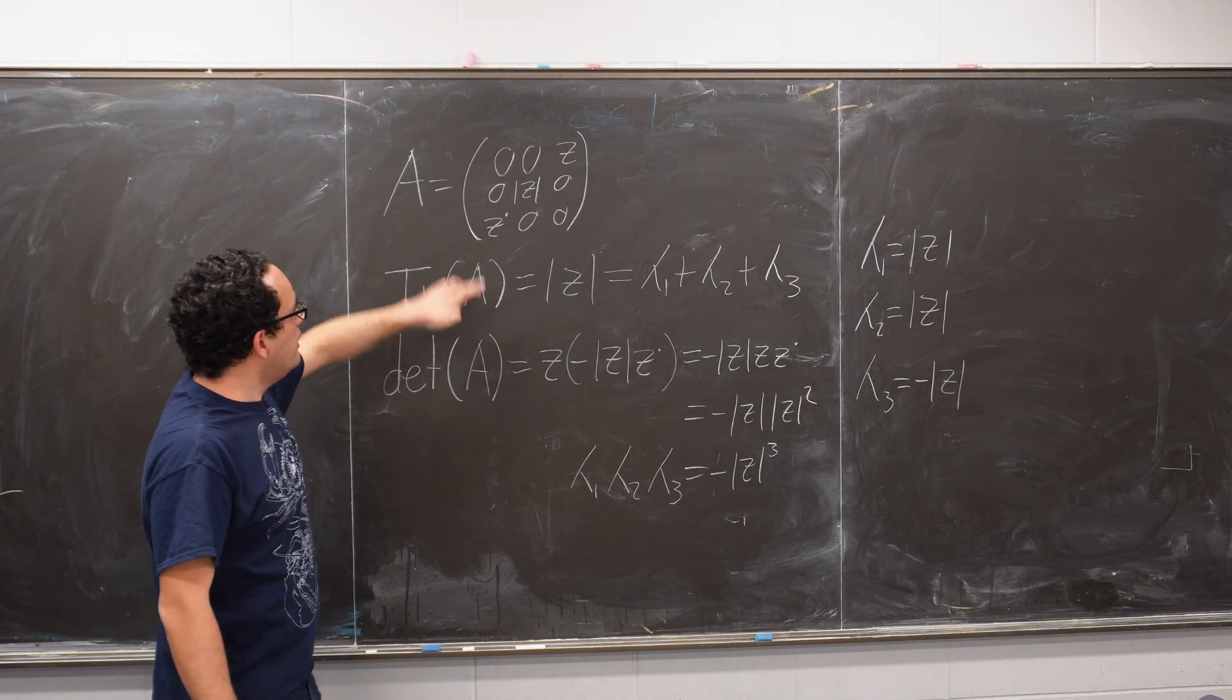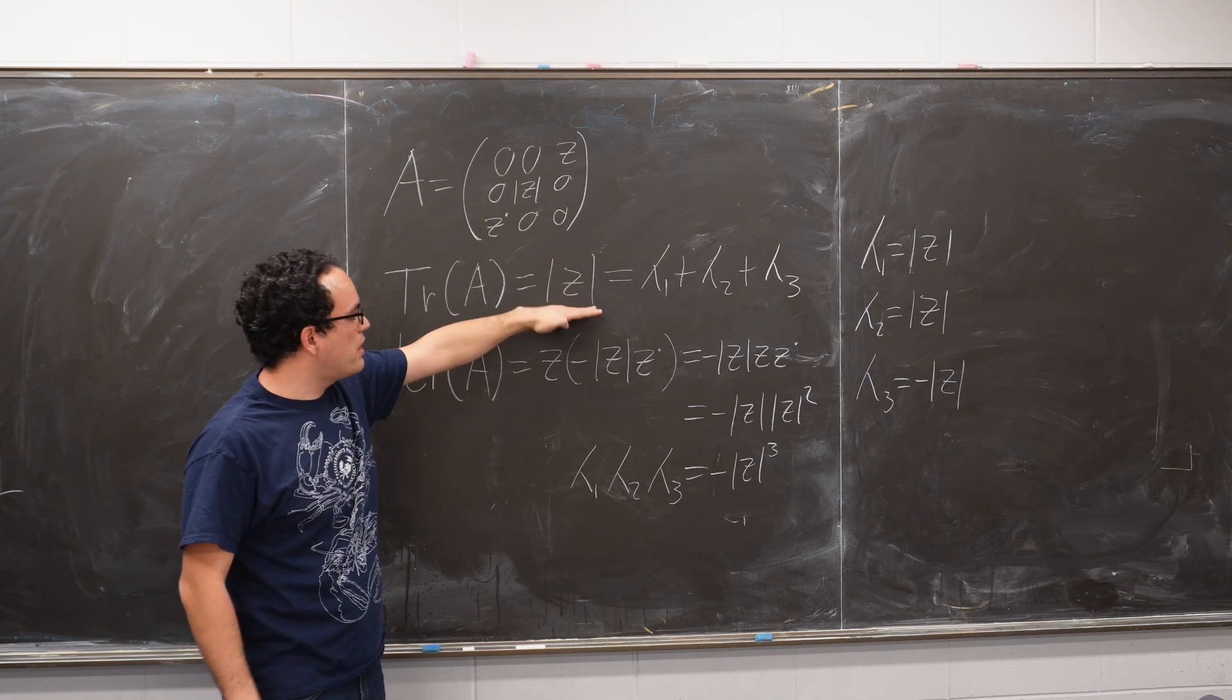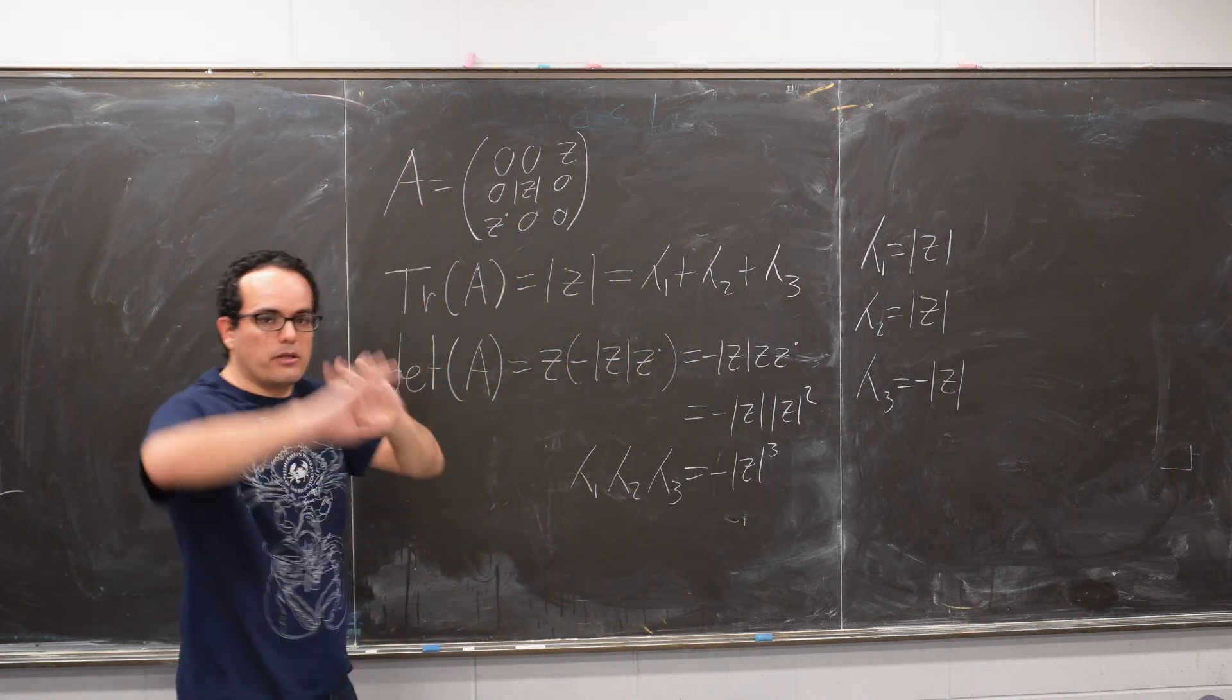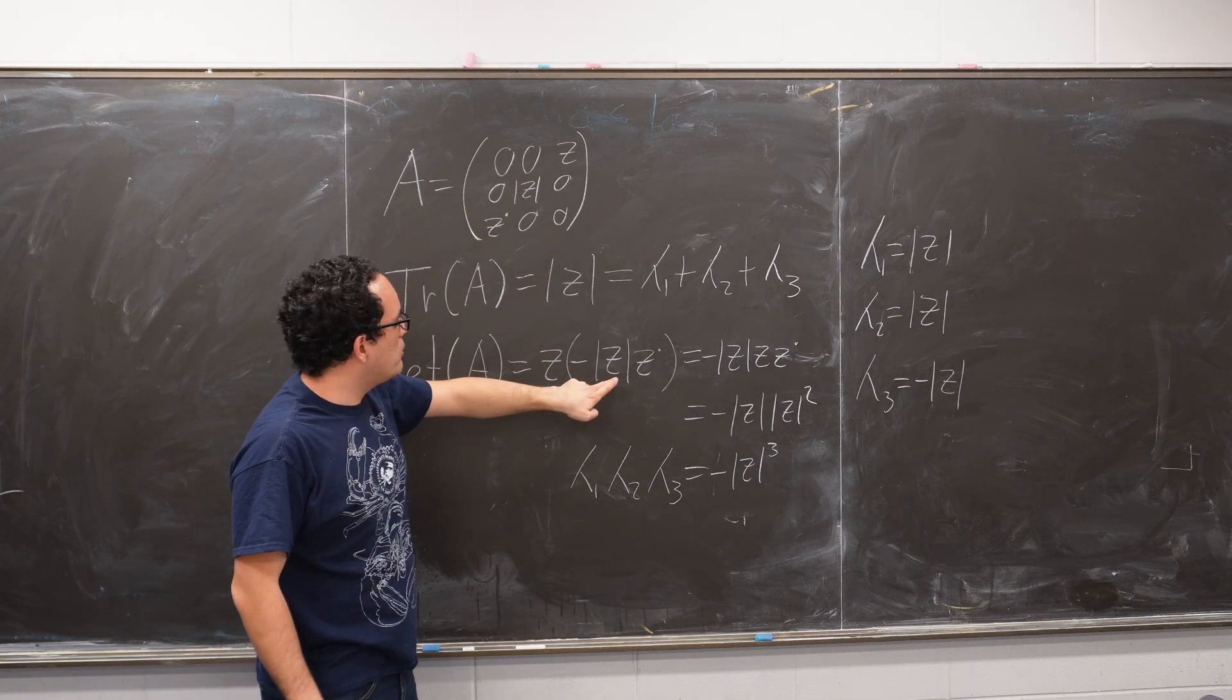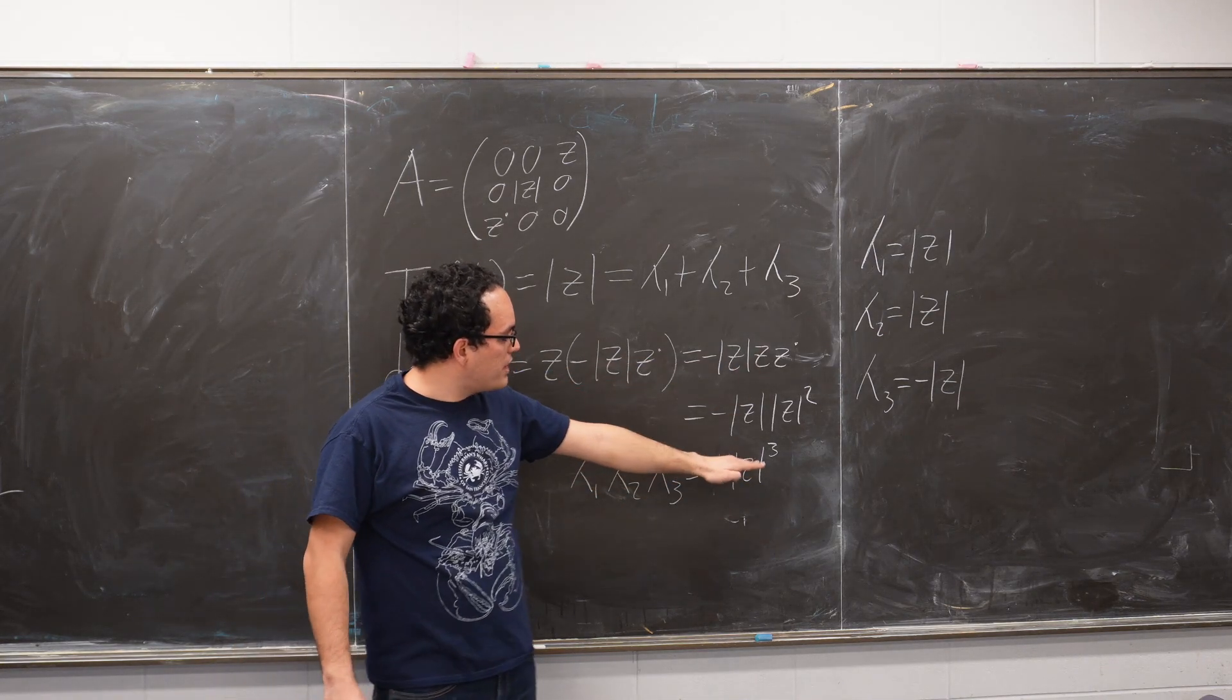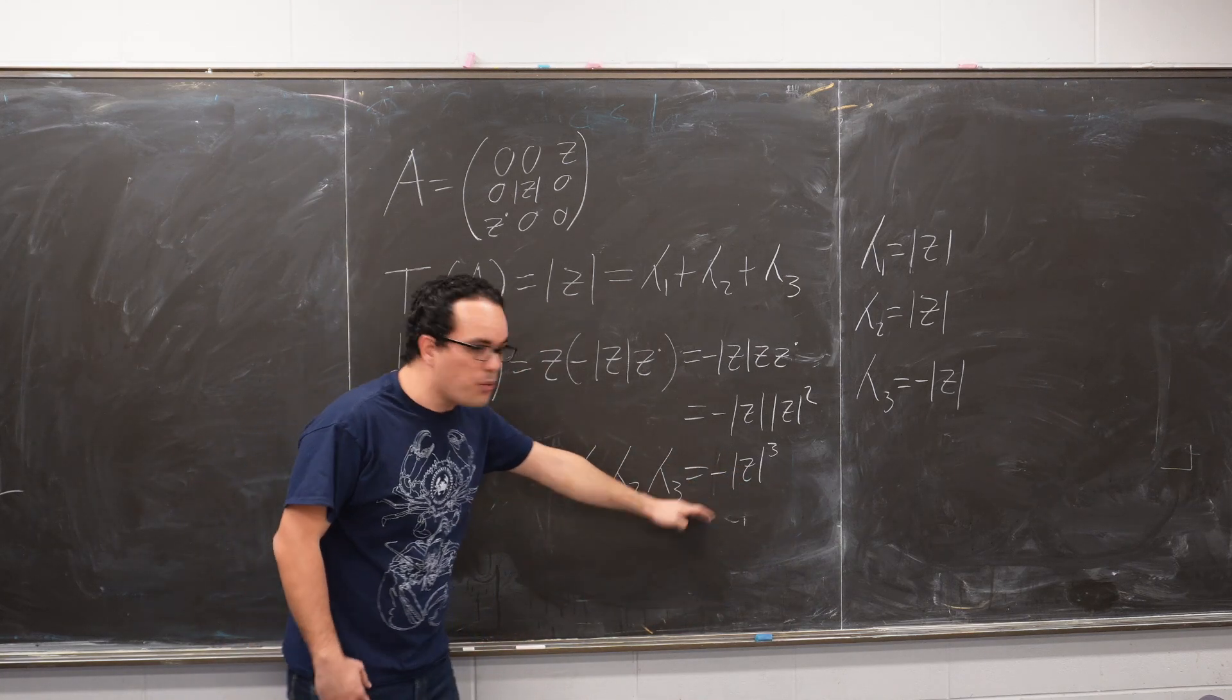We have the trace of A is equal to zero plus the magnitude of Z, plus zero is equal to the magnitude of Z, which is equal to λ1 plus λ2 plus λ3. And then we have the determinant that if you work it out, you're going to see that it's equal to Z minus the magnitude of Z times the complex conjugate of Z. And if you work this out, you'll see that this is equal to minus the magnitude of Z to the third. And this is equal to λ1 times λ2 times λ3.